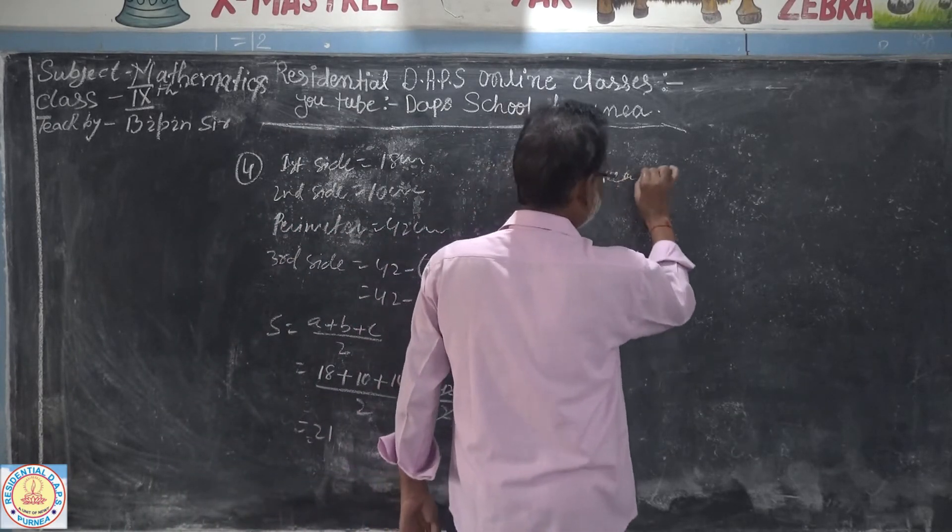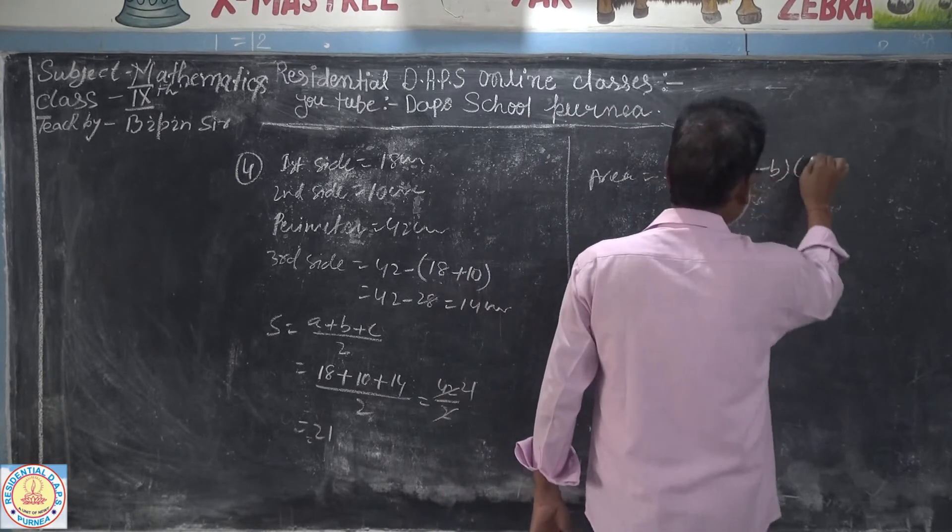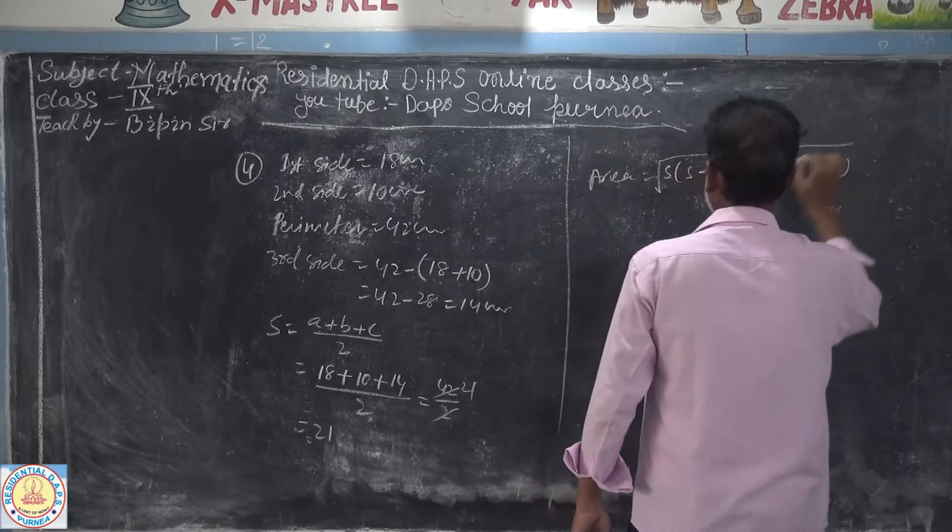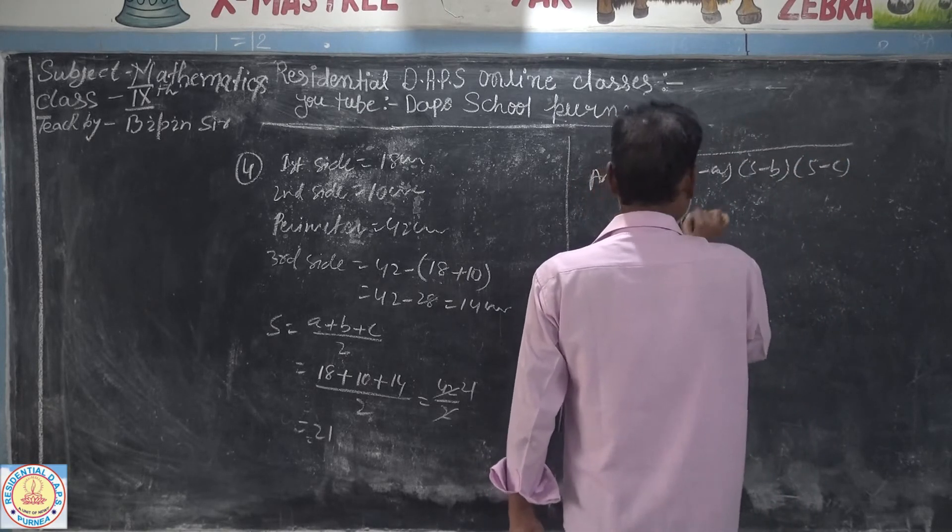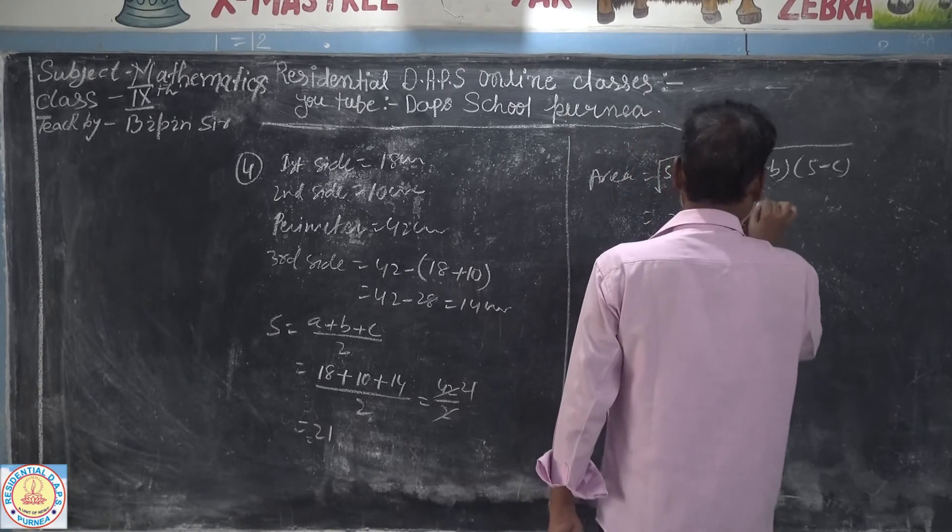Area equals square root of s times s minus a times s minus b times s minus c. Square root of 21 times 21 minus 18, times 21 minus 10, and 21 minus 14.